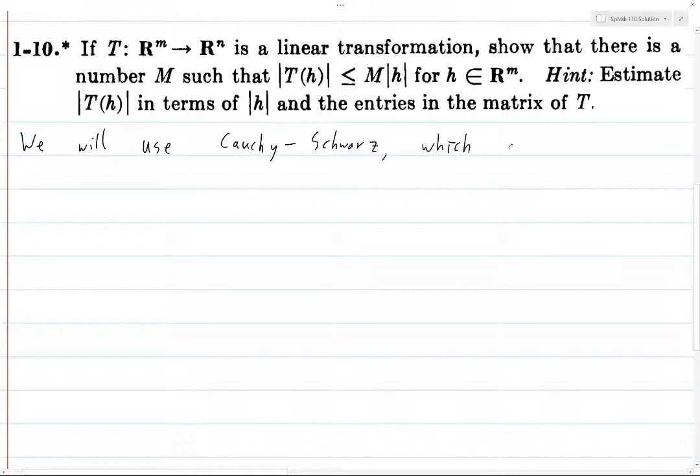So this is an inequality which says that if you take the inner product of x and y, take its norm and square it. Now, in this case, we're dealing with vectors in R^n or R^m. And so we don't need to take the absolute value before squaring it. However...